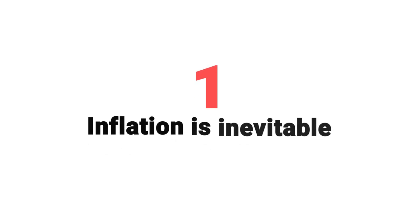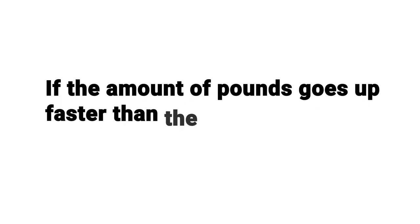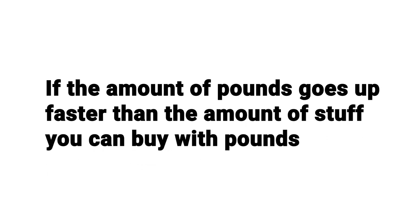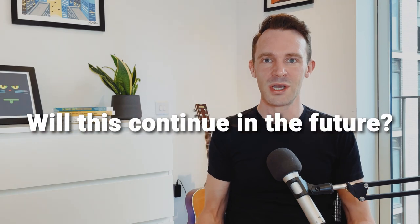So what can you actually do with this? What are the key takeaways? The first point is that inflation is inevitable. If the amount of pounds goes up faster than the amount of stuff you can buy with pounds, there will be inflation. Will this continue in the future? It seems highly likely, for lots of reasons — especially when you consider it's actually happening at a faster and faster pace over time.